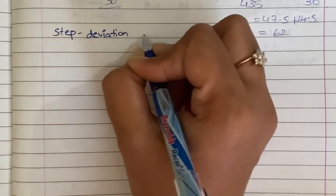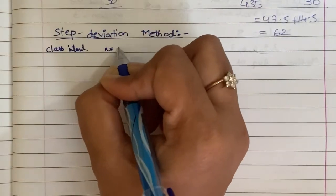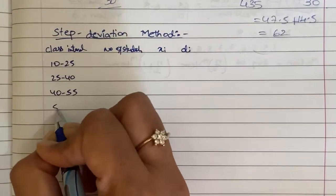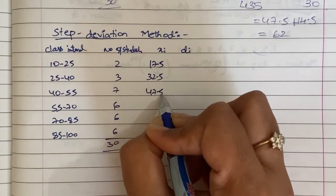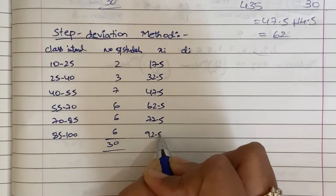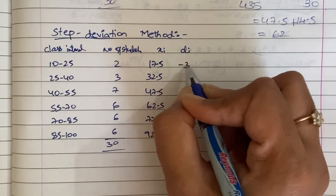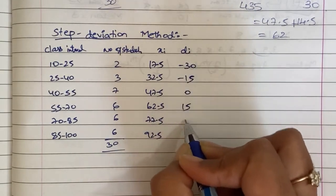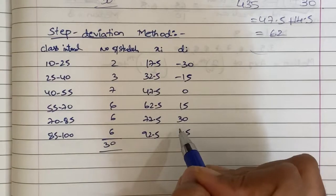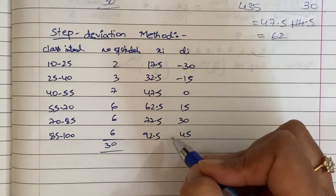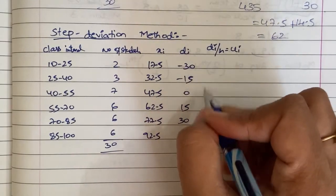Step deviation method. Same problem when we discuss. di would calculate: minus 30, minus 15, 0, 15, 30, 45. So we have to take the last method. What do we do? Already we have to take the deviation terms. We have to take 15 and common. So we have to take di by h. That is equal to ui. We have to take the 15 and divide. So 15 and divide: minus 2, minus 1, 0, 1, 2, 3.